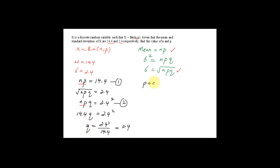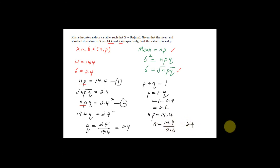Since p + q = 1, we get p = 1 − q = 1 − 0.4 = 0.6. Now to find n: since np = 14.4, n = 14.4 ÷ p = 14.4 ÷ 0.6 = 24. This is a very simple question — just apply the formula for the mean of binomial distribution, which is np, and the standard deviation, which is the square root of npq.